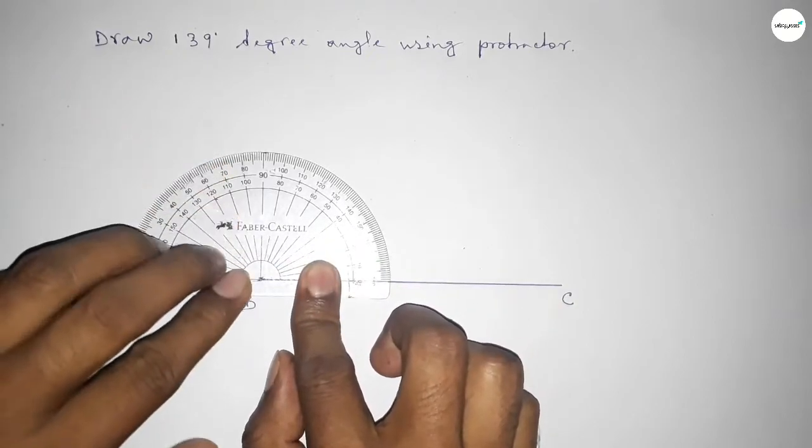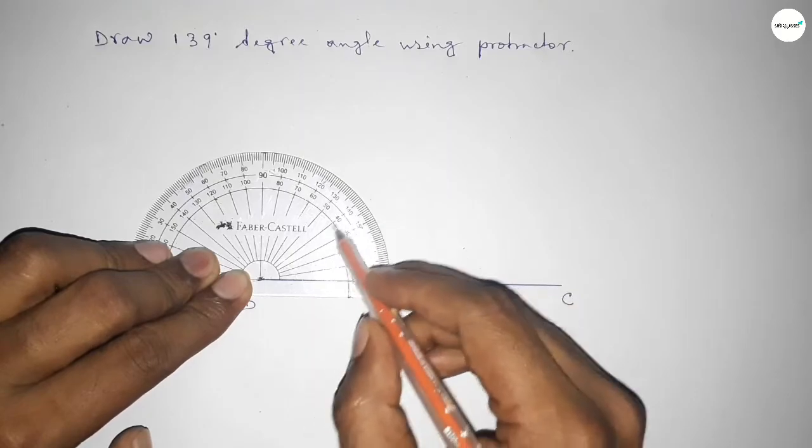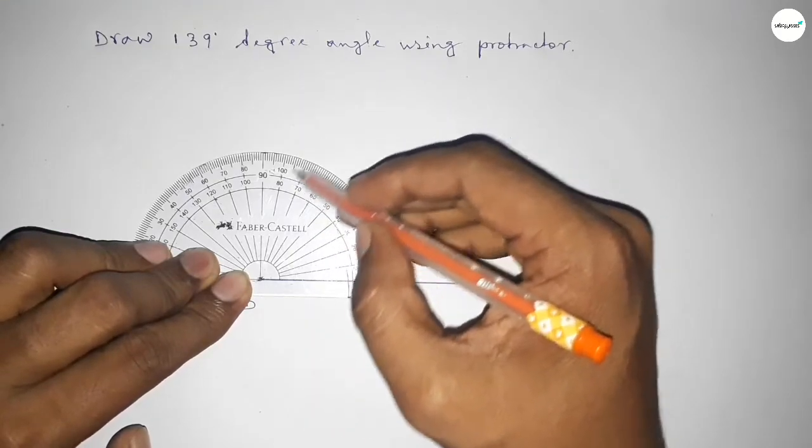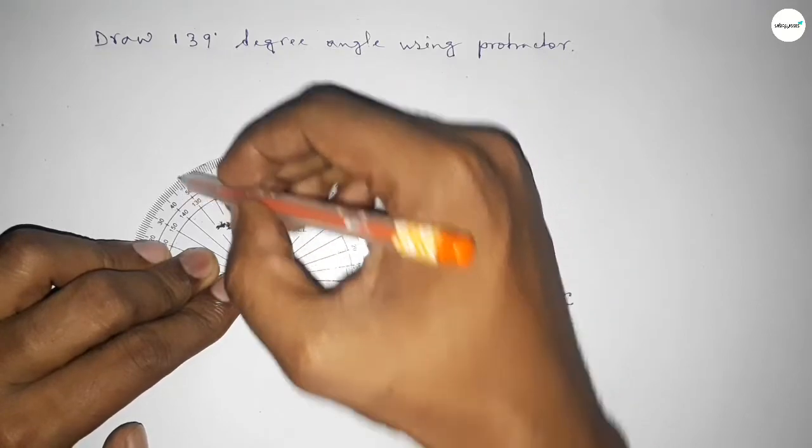So this is starting angle: 0, 10, 20, 30, 40, 50, 60, 70, 80, 90, 100, 110, 120, 130, 135, 136, 137, 138, 139. So this is 139 degrees.